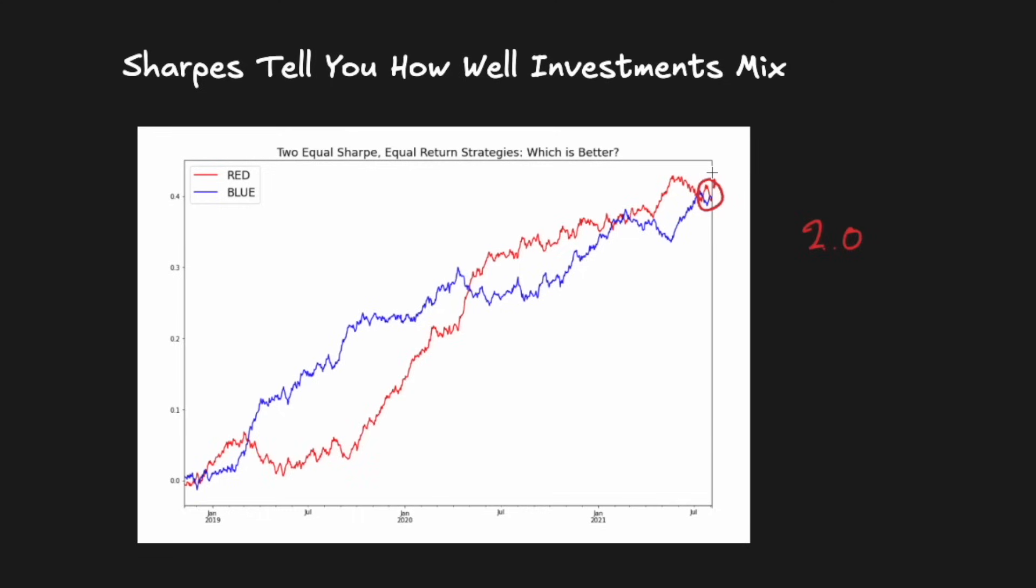But actually, there is a best investment that can be carefully chosen here. It can be found by observing that when red zigs, blue zags, and vice versa. In other words, their wiggles are opposite - they're negatively correlated. So if we combine the two investments, couldn't we cancel the wiggles, reduce risk, and obtain a higher Sharpe portfolio with a smoother return profile?